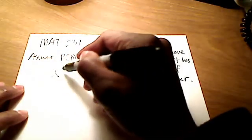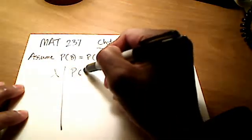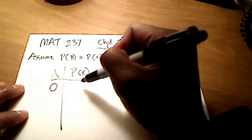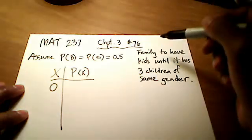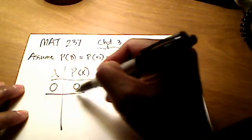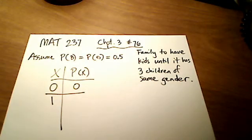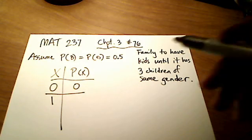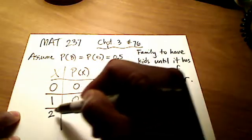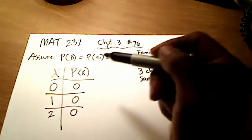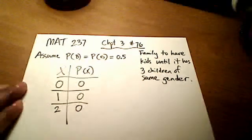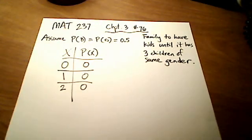WebAssign asks some simple questions at the beginning. For example, if you had zero kids, what's the probability you'll have three kids of the same gender? Zero chance. If you only had one child, the probability is still zero. Same thing for two children — it's still zero.